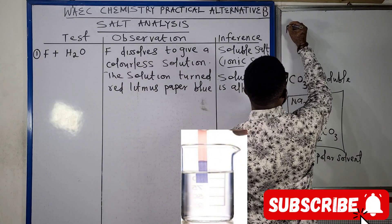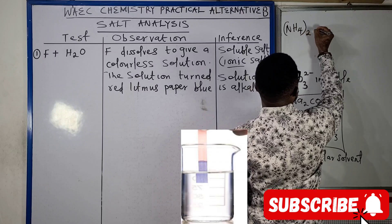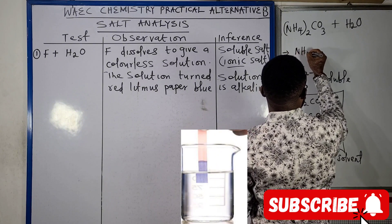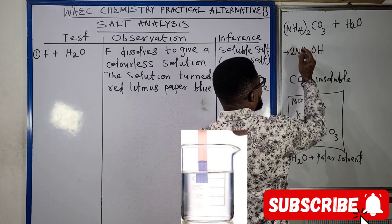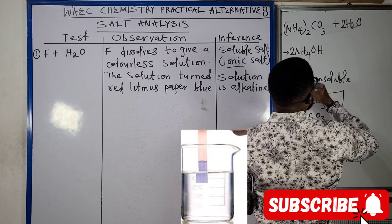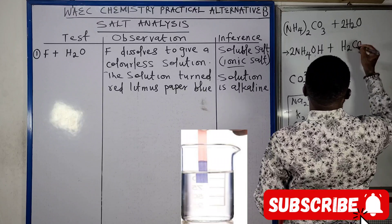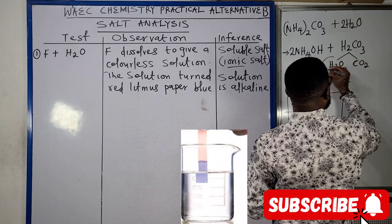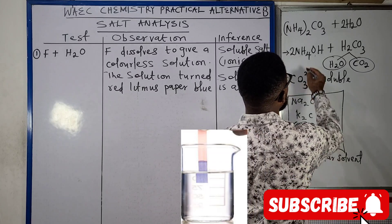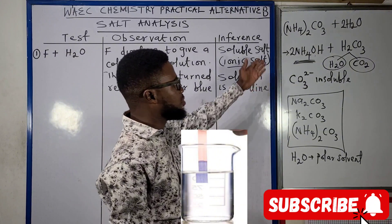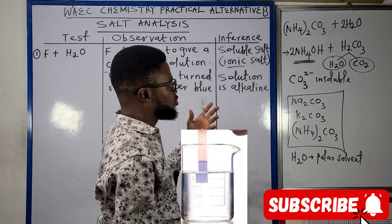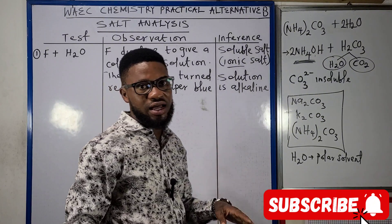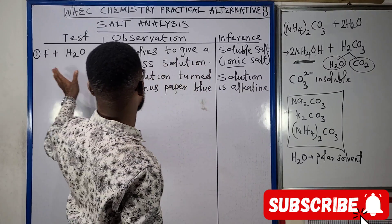Why is the solution alkaline? Since F is ammonium carbonate — (NH₄)₂CO₃ — when dissolved in water, aqueous ammonia (NH₄OH) is formed: 2NH₄OH plus H₂CO₃. H₂CO₃ being unstable decomposes to H₂O and CO₂. So you're basically left with the alkaline aqueous ammonium hydroxide solution. Testing with red litmus paper, ammonium hydroxide turns the litmus paper blue, confirming the solution is alkaline.